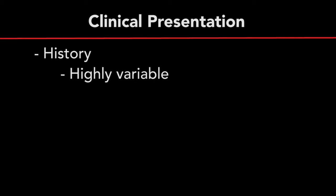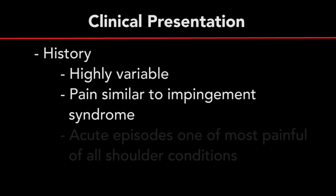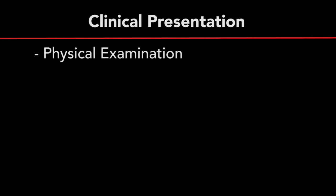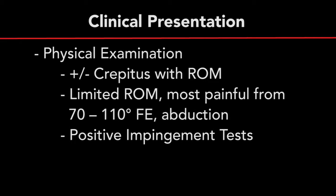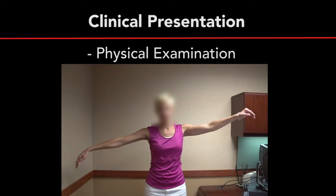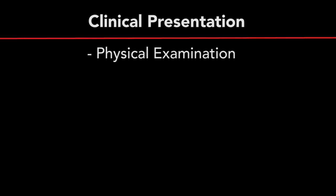The clinical presentation of calcific tendinitis is often variable. Greater than 50 percent of patients are asymptomatic. If symptomatic, patients often complain of intermittent episodes of pain, similar to that of impingement syndrome. Acute episodes may be one of the most painful of all shoulder conditions. On examination, patients will often demonstrate a decreased arc of motion, most painful between 70 and 110 degrees of forward elevation and abduction, with positive subacromial impingement signs.